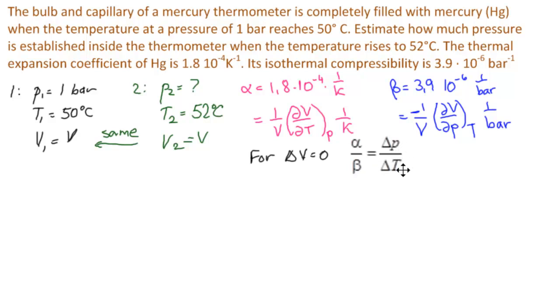And so we would substitute alpha, beta, P2 minus 1, and 2, and get P2. Let's see how this came about, just for a few minutes.